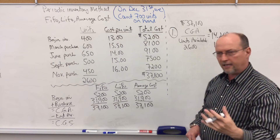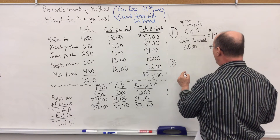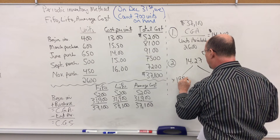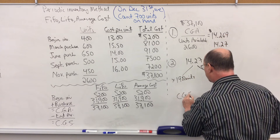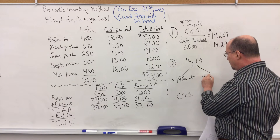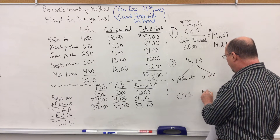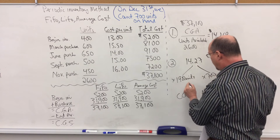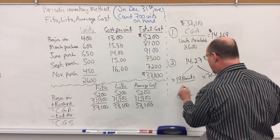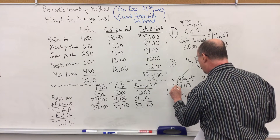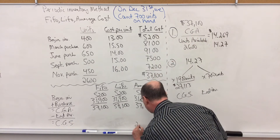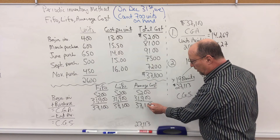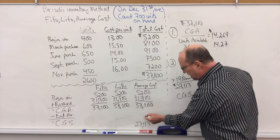Recognize there might be a slight rounding error as a result. Step two: we're going to take $14.27 and multiply it times 1,900 units — this gives us cost of goods sold — and then multiply it times 700 units, which gives us ending inventory. So $14.27 times 1,900 units is $27,113. We can put that down here as cost of goods sold. You could also calculate ending inventory by simply taking cost of goods available minus cost of goods sold.